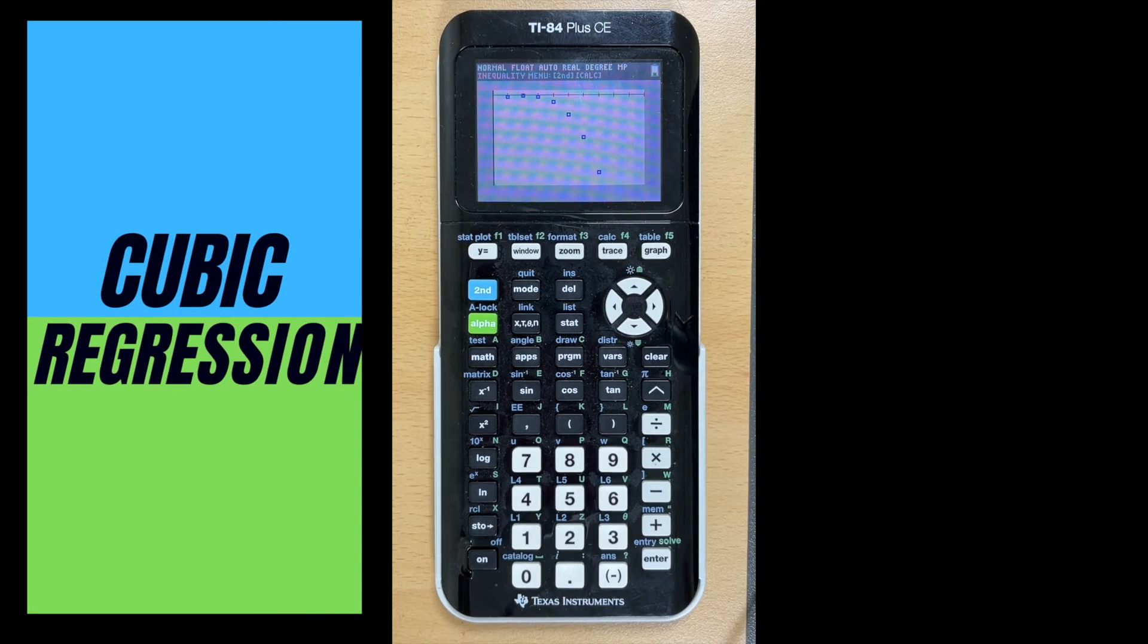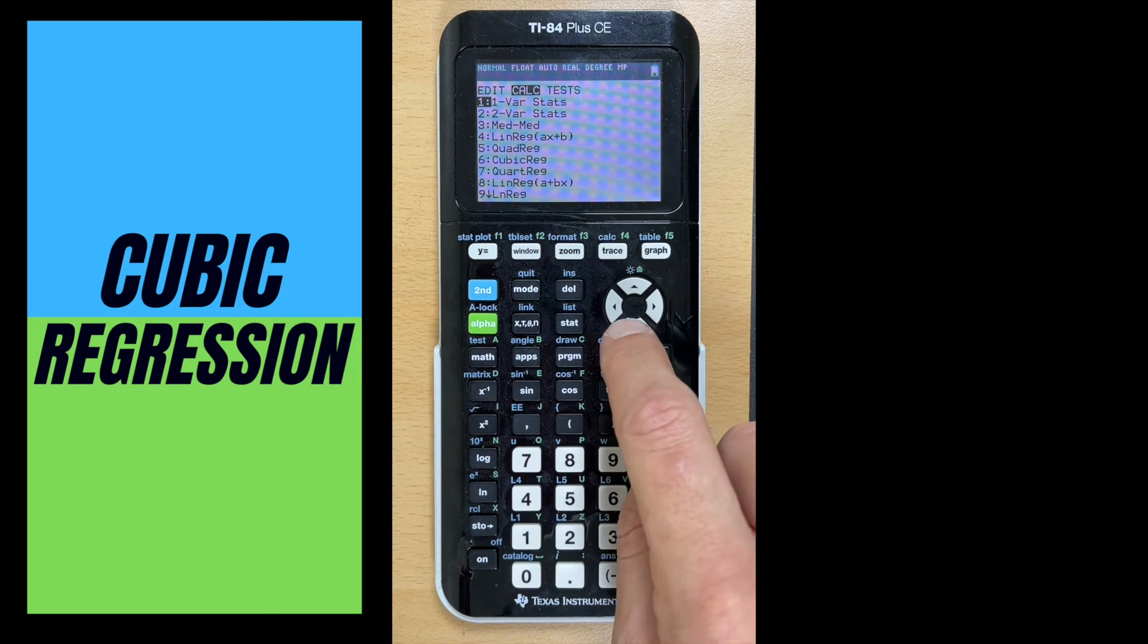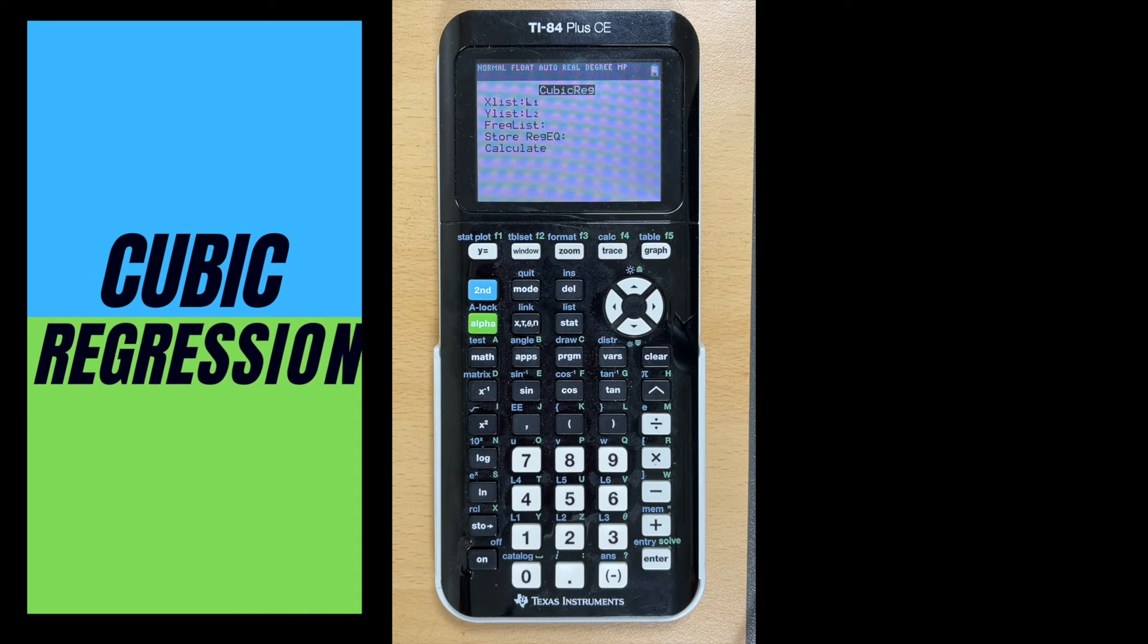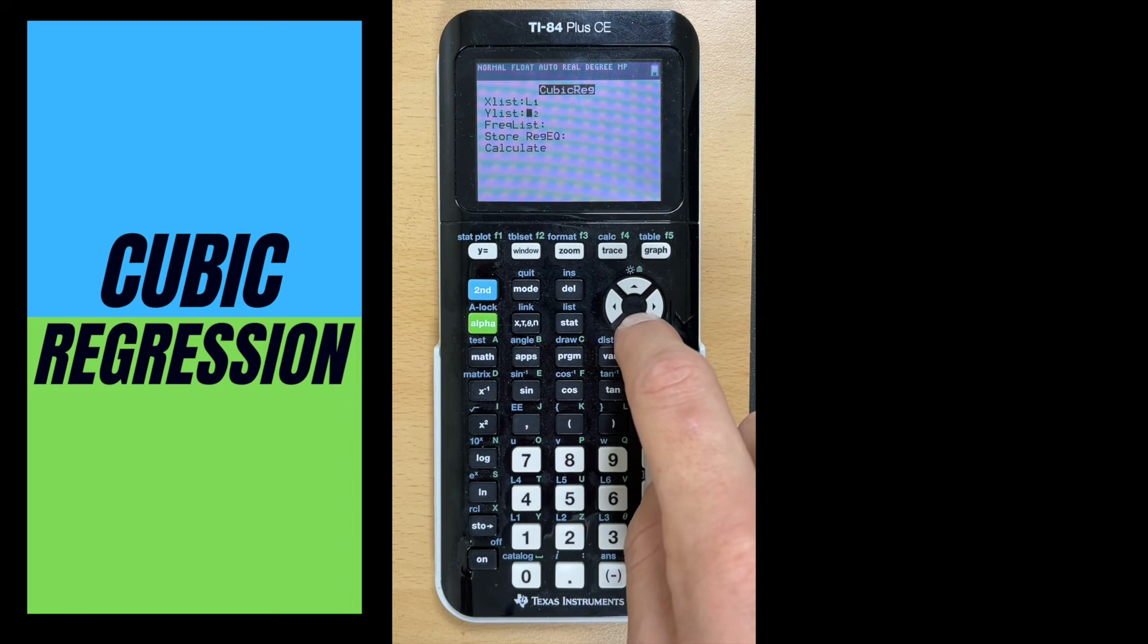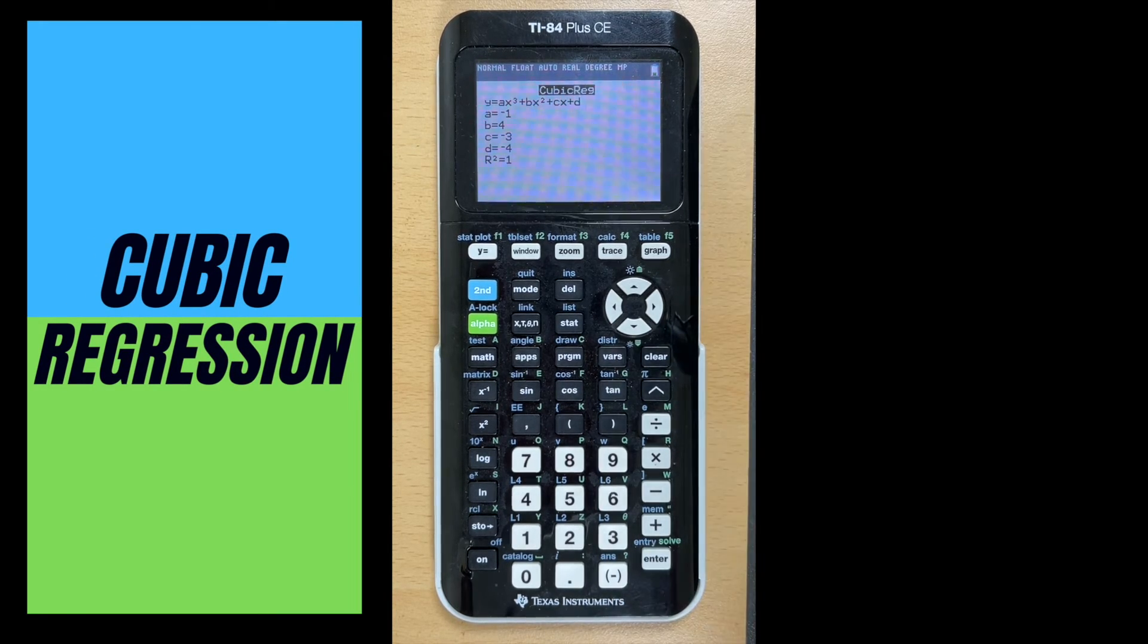Once we have that graphed, we can now go into stat, go over to calc, and we want to go down to where it says cubic REG, which stands for cubic regression. At this point, we hit enter. Now we want to make sure our lists are correct. Where's our x values? They're in L1. Where are our y values? That was in L2. Now once that's good, we can go down to calculate and hit enter. And it does all the work for us.